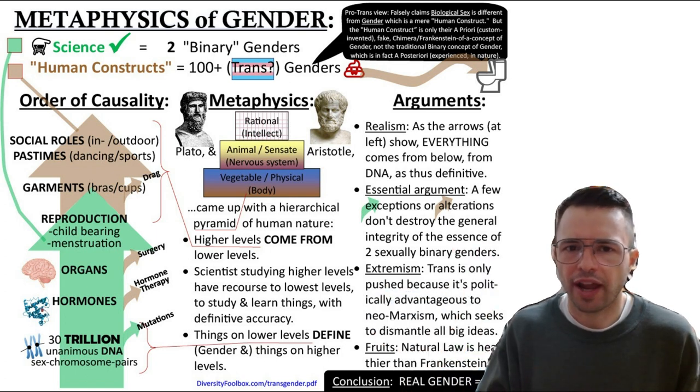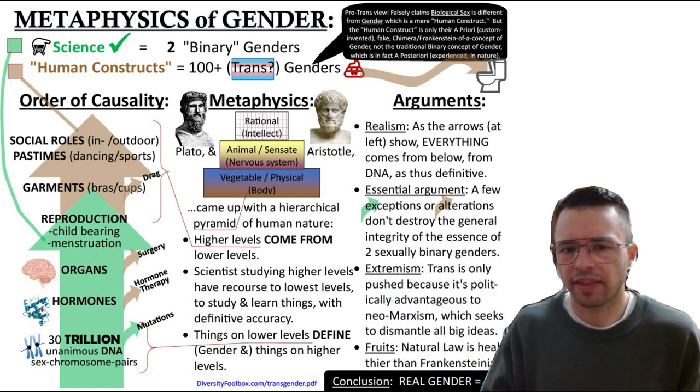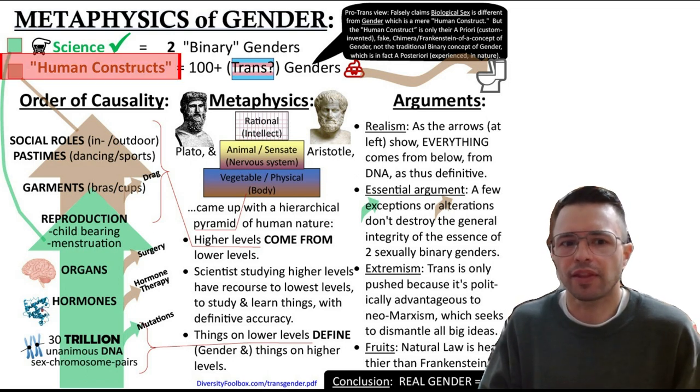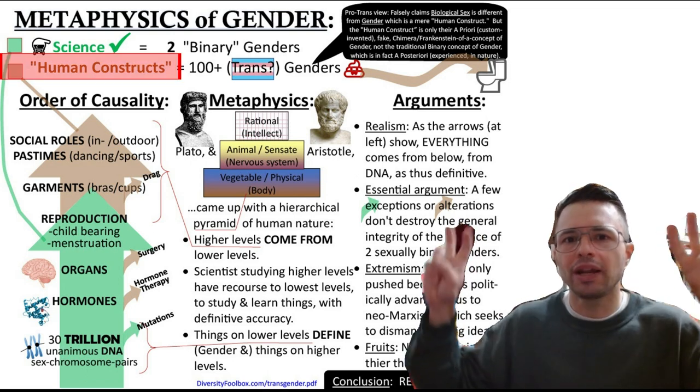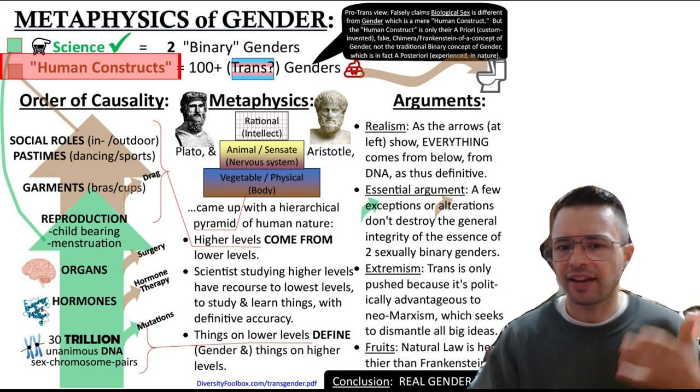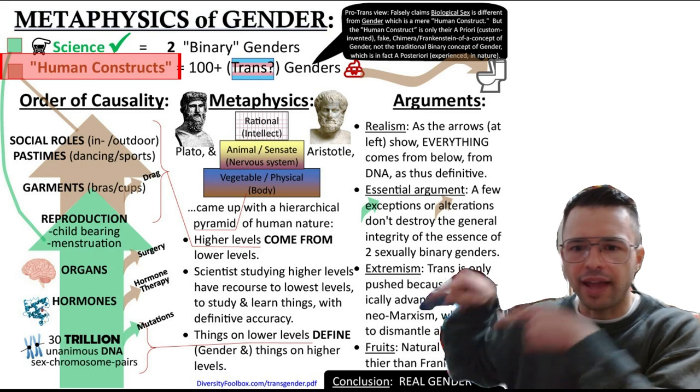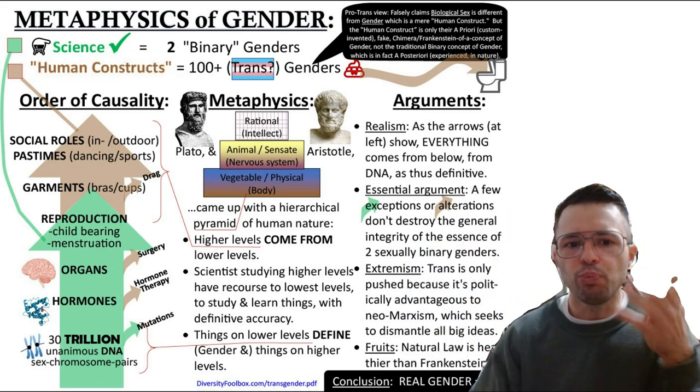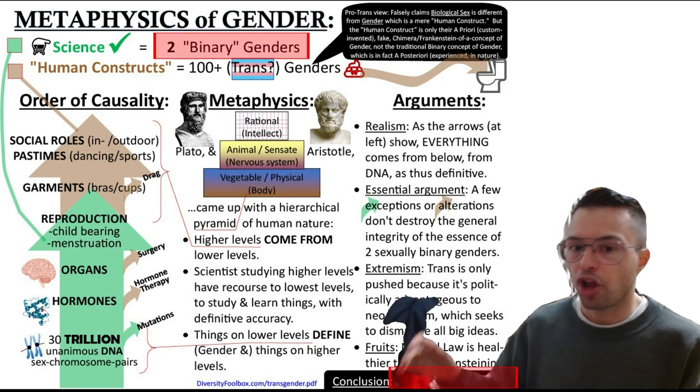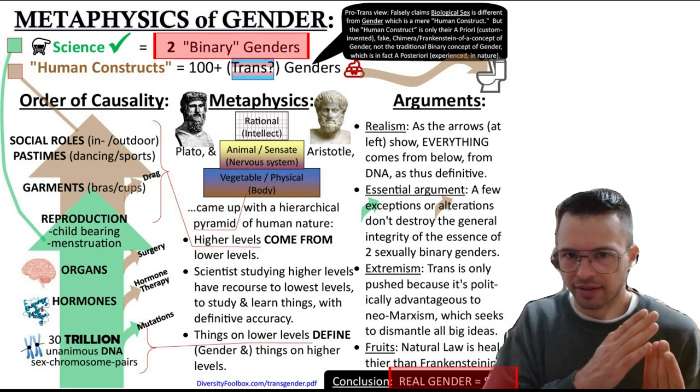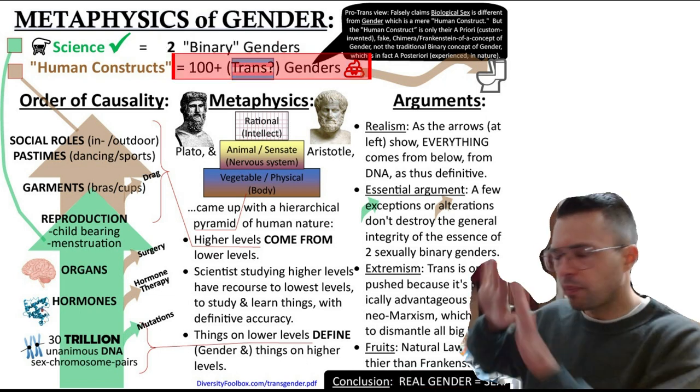Second, transgender advocates implicitly admit that their concept of gender is fake every time that they call gender a human construct. What they mean by this is that it is thought up, not in the lab, but in human minds. To this, you merely need to distinguish the real concept of gender, which is the same as sex, and which is binary, from theirs.